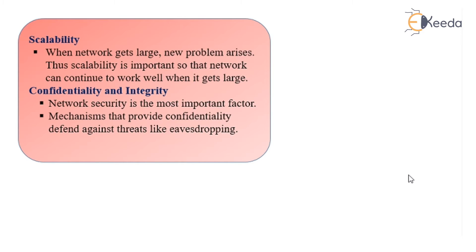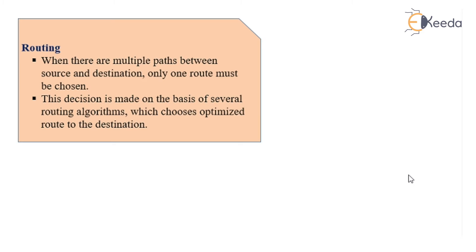Confidentiality and integrity: network security is the most important factor. Mechanisms that provide confidentiality defend against threats like eavesdropping. Routing: when there are multiple paths between a source and a destination, only one route must be chosen. This decision is made on the basis of several routing algorithms which use an optimized route to the destination.